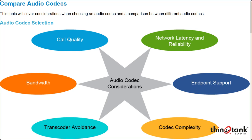Codec complexity refers to how much processing power a codec consumes and how many DSP resources it requires — given that DSPs are very expensive. Transcoder avoidance is key: all a transcoder is, is a bunch of DSPs. Transcoding can only be done in hardware, not software, because you're dealing with physical layer modulated signals. If you can't find a common codec between endpoints, you have to transcode — and that takes time.